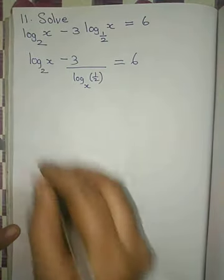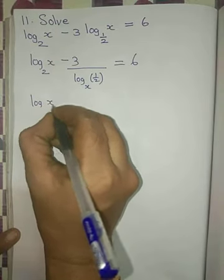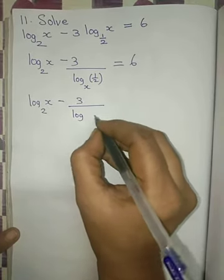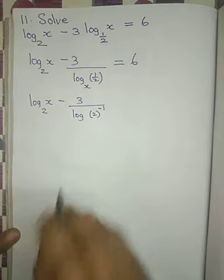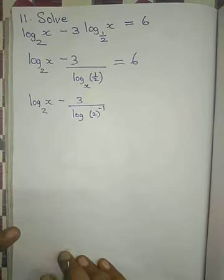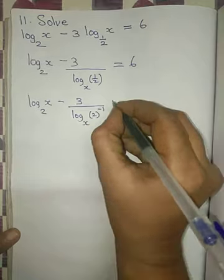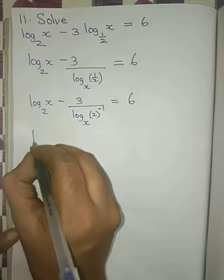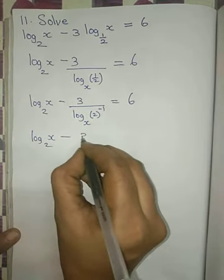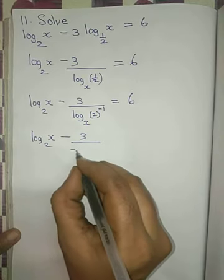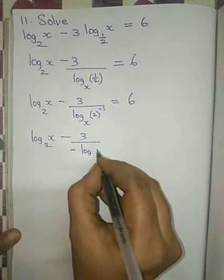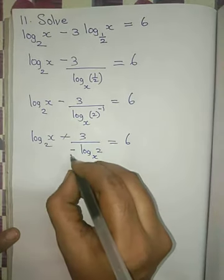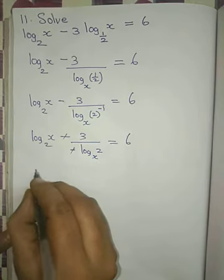The next step: log x to the base 2 minus 3, divided by log 1/2. Now 1/2 can be written as 2 to the power minus 1. Applying the power rule, the minus 1 comes to the front, giving minus log 2 to the base x, equal to 6. The two minus signs cancel out.